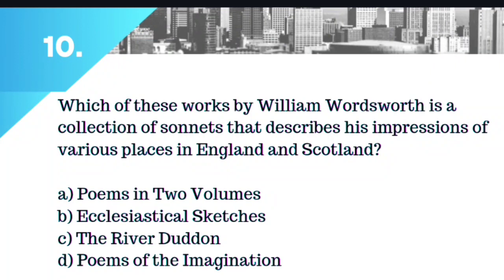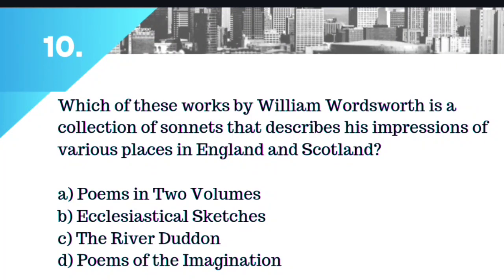Question number 10. Which of these works by William Wordsworth is a collection of sonnets that describes his impression of various places in England and Scotland? Option A: Poems in Two Volumes. Option B: Ecclesiastical Sketches. Option C: The River Dudden. Or Option D: Poems of Imagination. The right answer is Option D: Poems of Imagination. With this question we have reached the end of today's video. Thank you so much for watching and we will surely return with another video. Stay tuned.